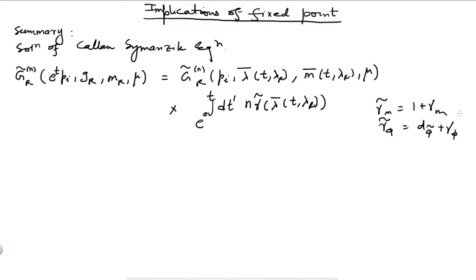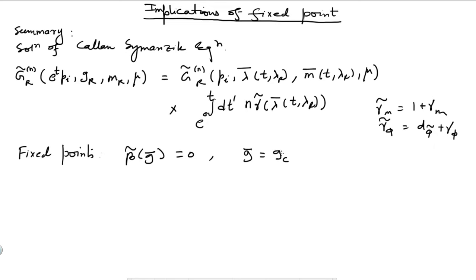That is what we have, and last time we talked about fixed points. What is a fixed point? A fixed point is when beta-tilde equals 0 — that is, the value of g-bar, call it g_c, for which beta-tilde(g_c) = 0. You can have an ultraviolet fixed point or an infrared fixed point.